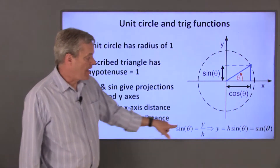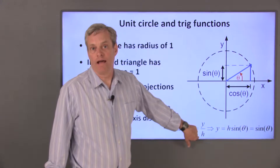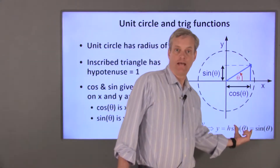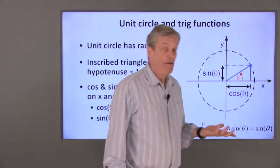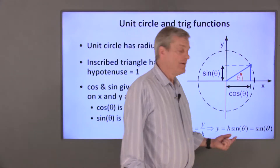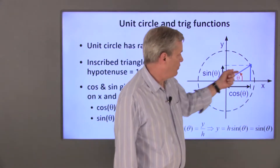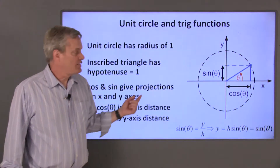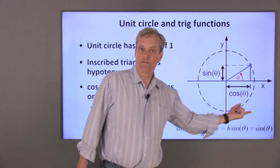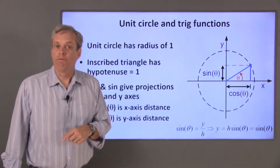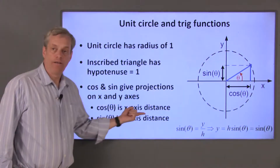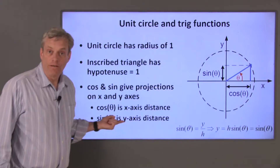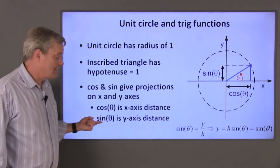Likewise, the sine of theta is equal to y over the hypotenuse, so y equals the hypotenuse length times the sine of theta. The hypotenuse length is 1, so the y value of this point is the sine of theta. Next I'll do some examples of specific points around this unit circle. Keep in mind that the x value of a point is equal to the cosine of theta, and the y value of a point is the sine of theta.